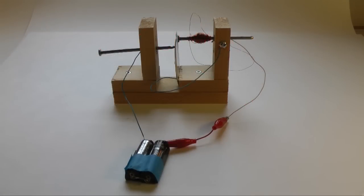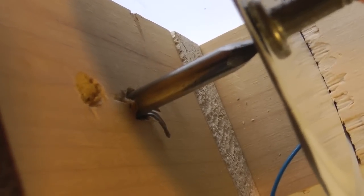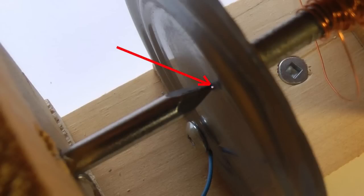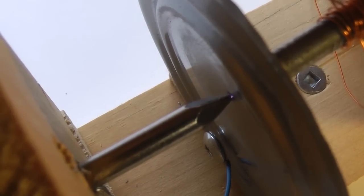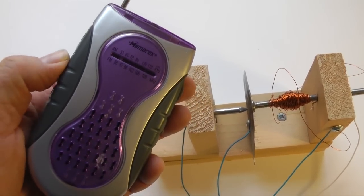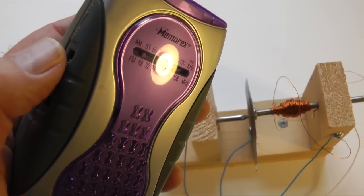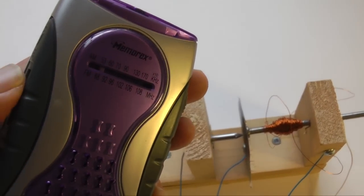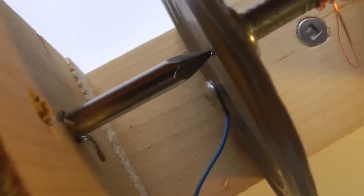This buzzer also demonstrates something else. Spark gap wireless communication. When a buzzer like this is operating, sparks occur at the contact point. These sparks generate radio waves, electromagnetic radiation. You can detect this radiation with an AM radio. Early Morse Code wireless radio transmission was accomplished with spark gap generators. The principle is demonstrated by this buzzer.